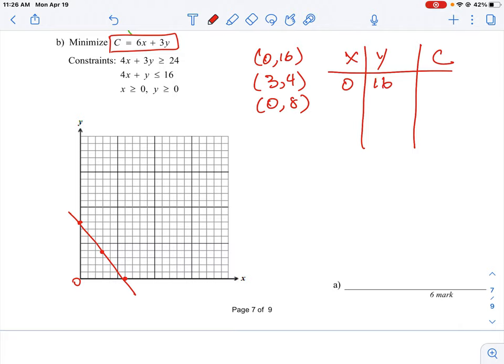For the first point (0, 16), x is 0 so 6 times 0 is 0, but 3 times 16 is 48. Our next point is (3, 4). So 6 times 3 is 18, and 3 times 4 is 12, giving us 30. Our last point is (0, 8). X is 0, and 3 times 8 is 24.